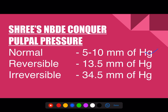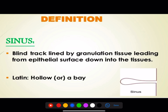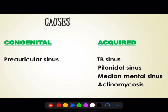Normal pulpal pressure is 5–10 mmHg. Reversible pulpitis pressure is 13.5 mmHg and irreversible pulpitis pressure is 34.5 mmHg. A sinus is a blind tract lined by granulation tissue leading from one epithelium down into the tissue — it has one opening into the tissue. Sinuses can be congenital or acquired.